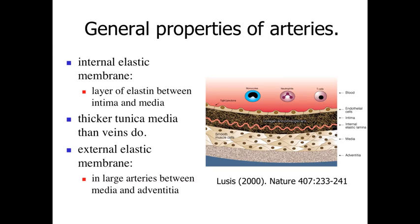In many of the larger arteries, between the tunica media and the tunica adventitia, we're going to have an external elastic membrane, or external elastic lamina — a layer of elastic fibers concentrated in this region. In many arteries, within the tunica media between the smooth muscle cells, we'll see lots of elastic fibers. So we have both the muscle cells for strength and support, and the elastic fibers for the ability to expand and recoil.